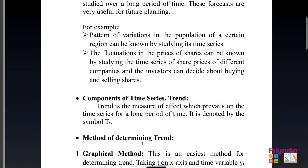There are a number of components given in your textbook, but the most important one is the trend. Trend is the component of time series that measures the effect which prevails on the time series for a long period of time. It is denoted by the symbol T.